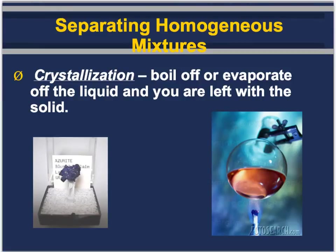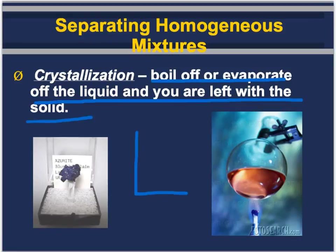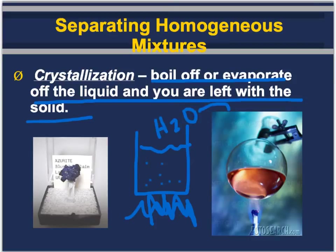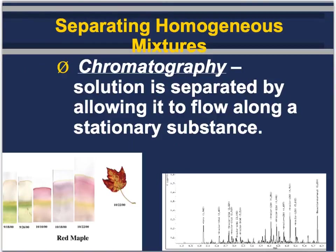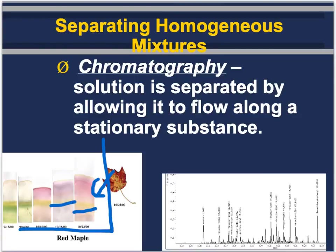The next process is crystallization — you boil off or evaporate the liquid and you're left with a solid. For example, if you have water with sugar dissolved in it, you heat it up, make the H2O evaporate, and you're left with a crystal layer of sugar on the bottom of the beaker. Another separation technique is chromatography, where the solution is separated by allowing it to flow along a stationary substance. In the example here, you can see the different pigments of a leaf being separated into distinct lines. If you've ever had to take a drug test, that's an example of chromatography.